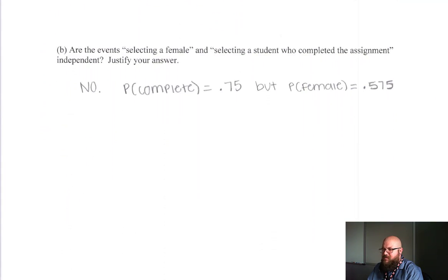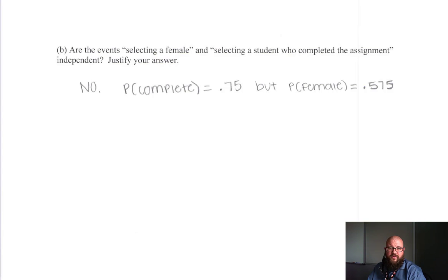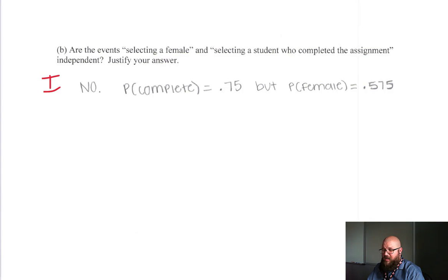For Part B — selecting a female and whether completing the assignment is independent — they said no. That seems okay on the surface, but they didn't identify the two probabilities properly or state whether those probabilities should be equal or not equal. The response didn't include an explanation for why they concluded no. Because there's no justification for how they came up with that, they got an I — incorrect — and lost complete credit on that.